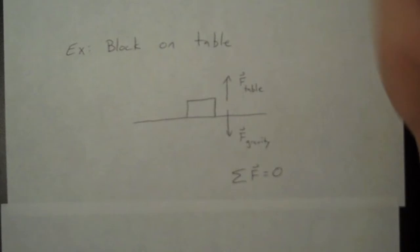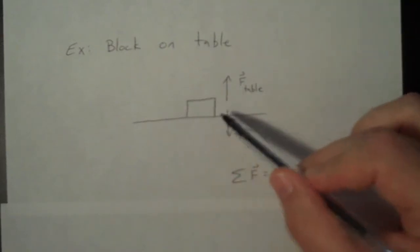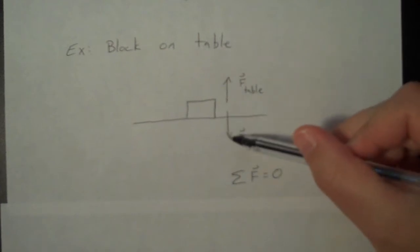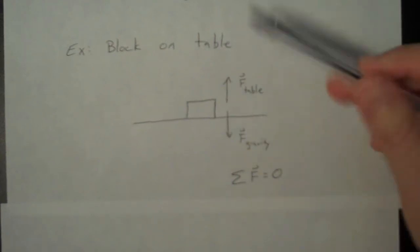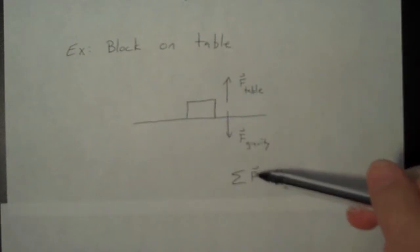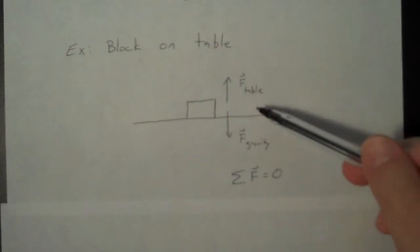Another example would be a block on a table. So here's a block. This is a tabletop. There are two forces acting on the block. There's the force of gravity downwards, and there's the force of the table upwards. But when you add those two forces up, they add up to zero. So this is also an equilibrium.